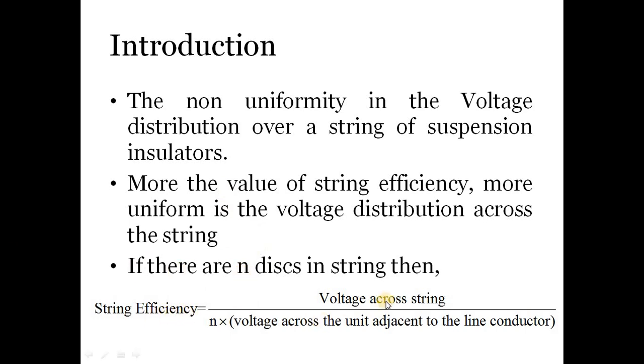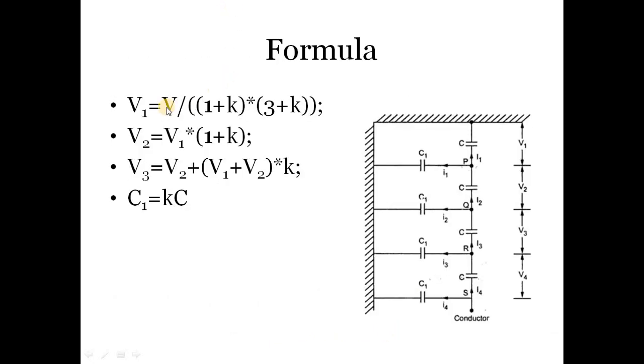If there are N disks in the string, then string efficiency can be given by voltage across the string upon N, which is the number of disks in the string, multiplied by the voltage across the unit adjacent to the line conductor.